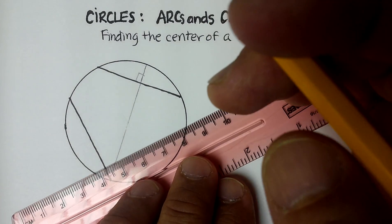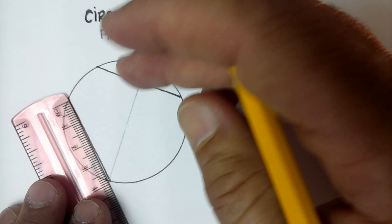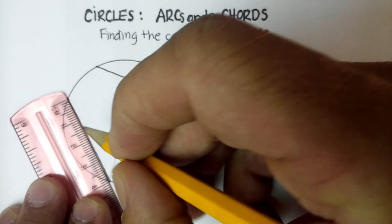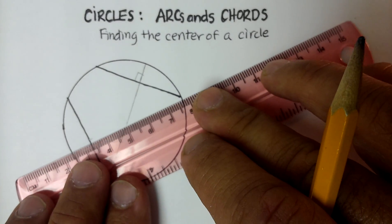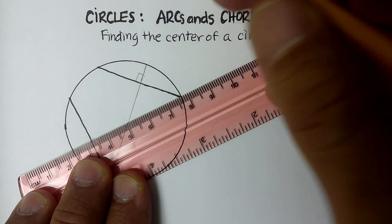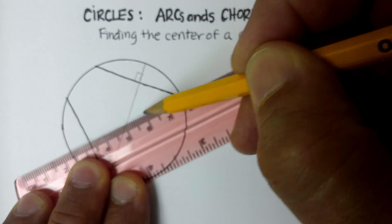If you take the perpendicular bisector of both of the chords, let's do that, and it just turns out that this particular chord is also four centimeters. And let's go ahead and draw the perpendicular on that as well. And there we go.